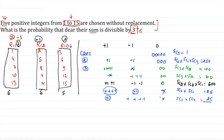We have all the cases possible. Adding them up: 1 + 250 + 200 + 500 + 50 = 1001. So the total number of favorable outcomes is 1001.